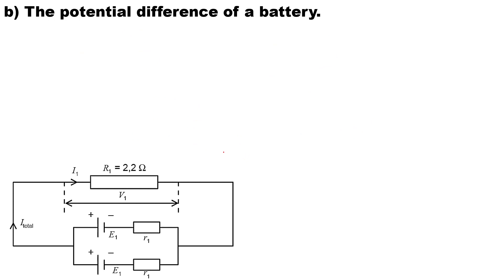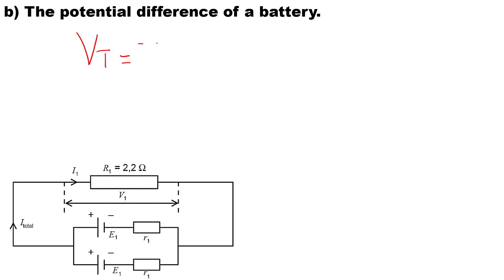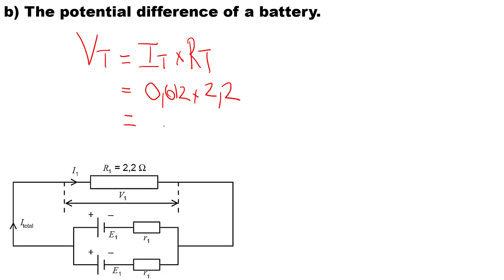In part B, we need to calculate the potential difference of the battery. It's important to note that potential difference is measured in a closed circuit — you place your voltmeter across the battery with the external resistor in the circuit. The potential difference V total equals I total multiplied by the external resistance: 0.612 times 2.2 ohms, giving a potential difference of 1.346 volts.